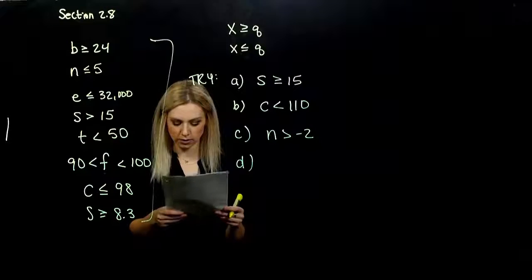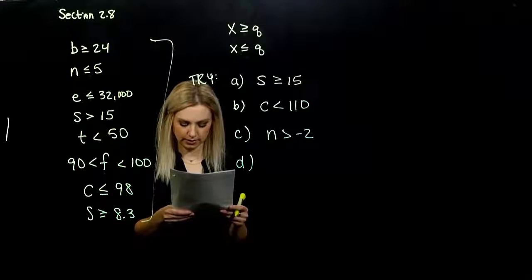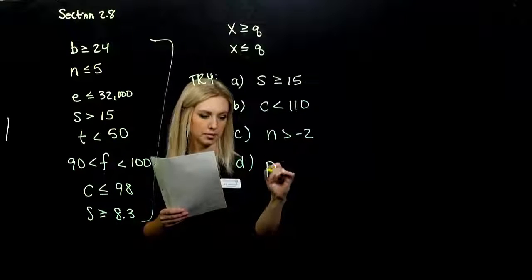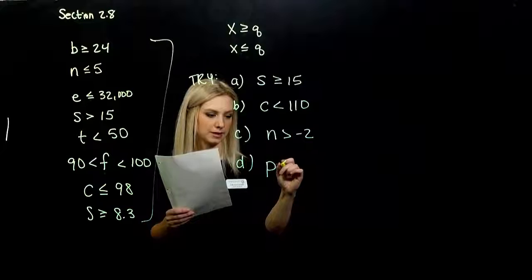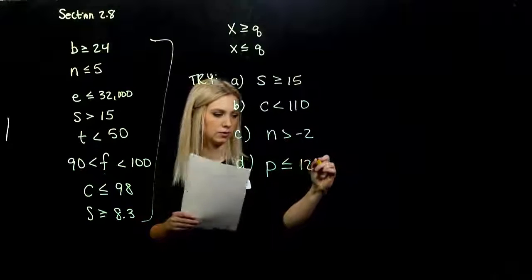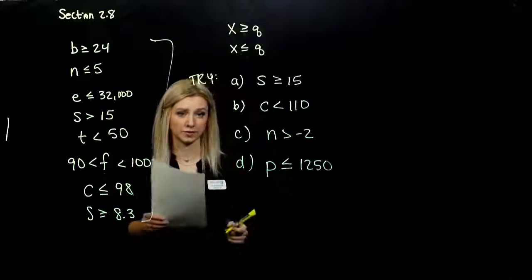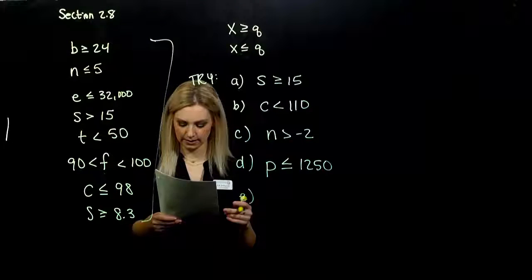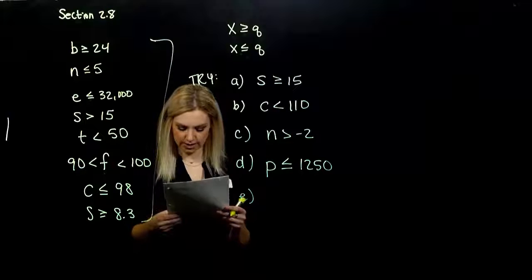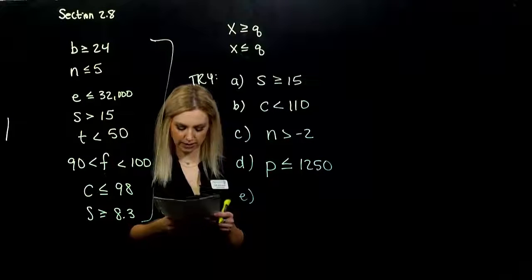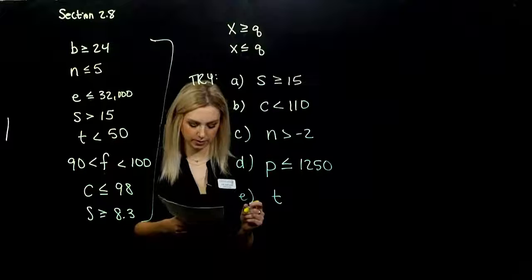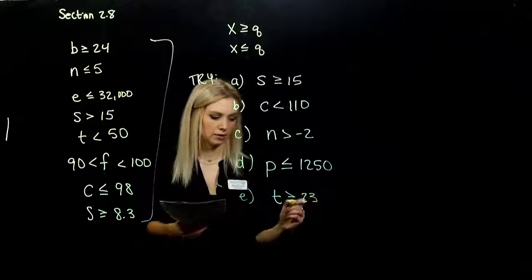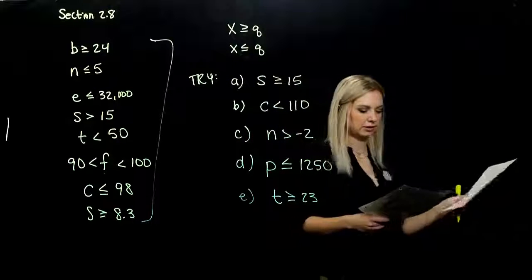D. At most, 1,250 people attended this concert. So we have max capacity at that number. So my population, or the people attending, has to be less than or equal to 1250. Because those are the number of seats that I have. I could not fill it up. I could fill it up to capacity. Last. E. Yesterday, at least 23 people got tickets for speeding. So if T are my number of tickets, at least 23. So I could have exactly 23, or I could have more than that.